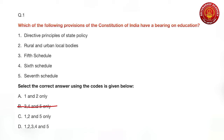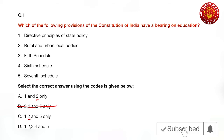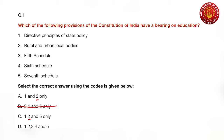All options mention the Fifth Schedule, which talks about scheduled areas and scheduled tribes; the Sixth Schedule, which covers tribal areas; and the Seventh Schedule, which deals with the division of legislative powers between center, state, and concurrent lists. The Seventh Schedule definitely contains education as a subject — we transferred five subjects from the state list to the concurrent list, and education is one of them. Options three and four also relate to administration and control of scheduled areas and tribal areas. So the correct option is D.